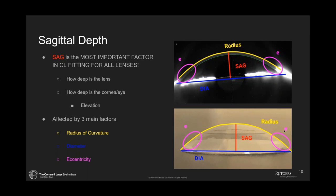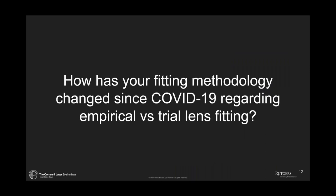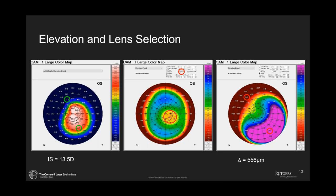Some of the things we're going to touch on today are the various lens modalities: soft lenses, custom soft lenses, corneal lenses, hybrid, piggyback, scleral, and ortho-K. The first question is: how has your fitting methodology changed since COVID-19 regarding empirical versus trial lens fitting? Very little. I have been very pro empirical lens fitting for a very long period of time. I'm using the data from these scans to help decide what sort of lenses to use and determine whether or not an individual should be fit in an empirically driven lens.